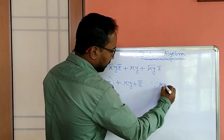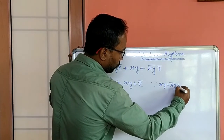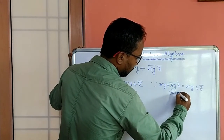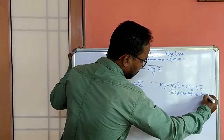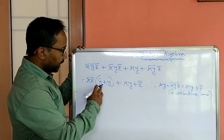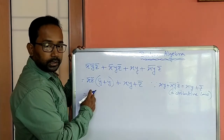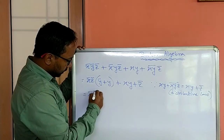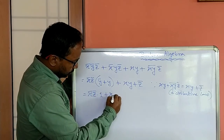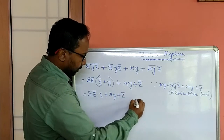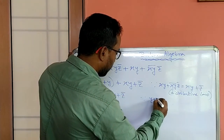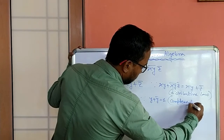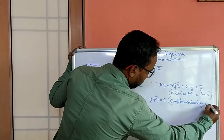So here you can write xy plus xy whole not equal to xy plus z not according to the distributive law. Now from here y plus y not or y not plus y equals 1, that is according to the complementarity law. So here x not, z not into 1 plus xy plus z not, and y plus y not equals 1. Complementarity law.